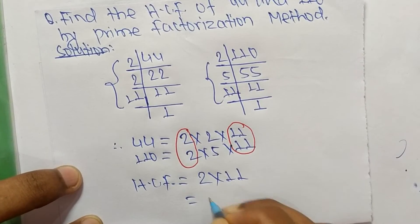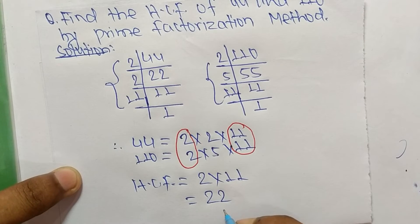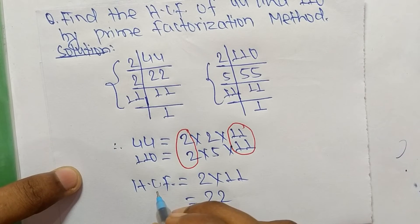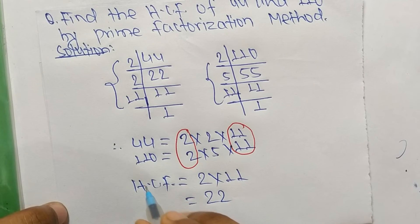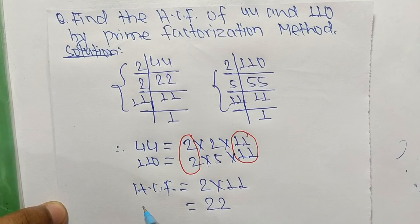2 times 11 means 22. So 22 is the HCF of 44 and 110. That's all for today, and thanks for watching.